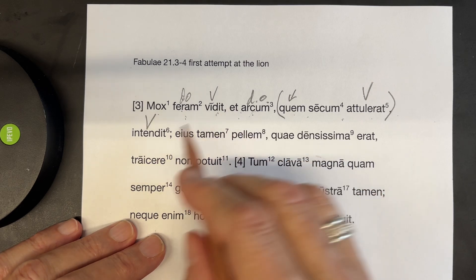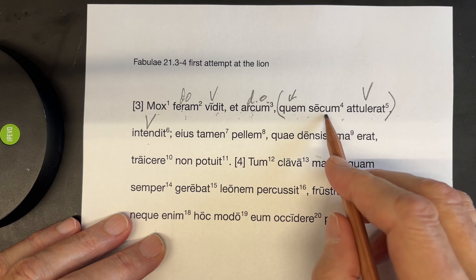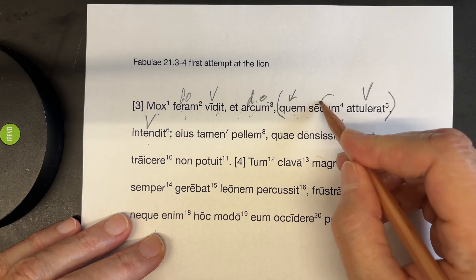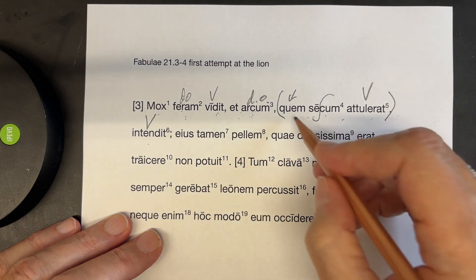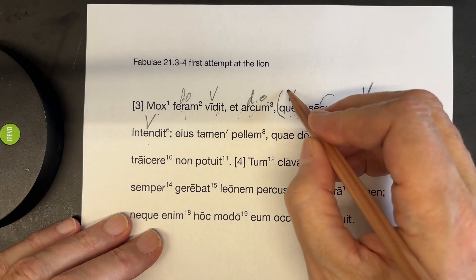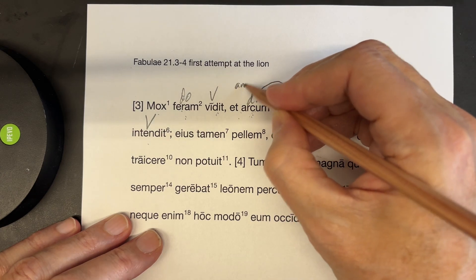And this direct object goes with this big V here, this verb. And he drew his bow, which he had brought with him. This is one of those flip-flop dealies. It's really cum se, with him. Now, this relative pronoun, it refers to the Arkham.